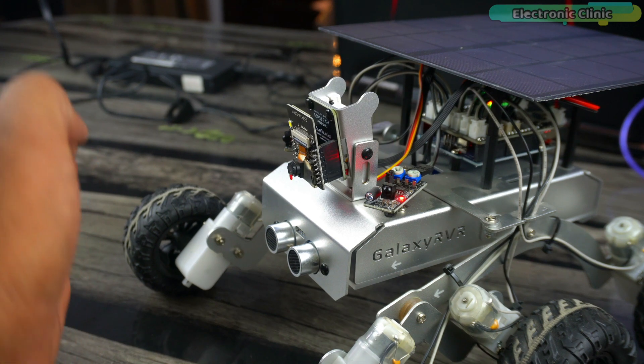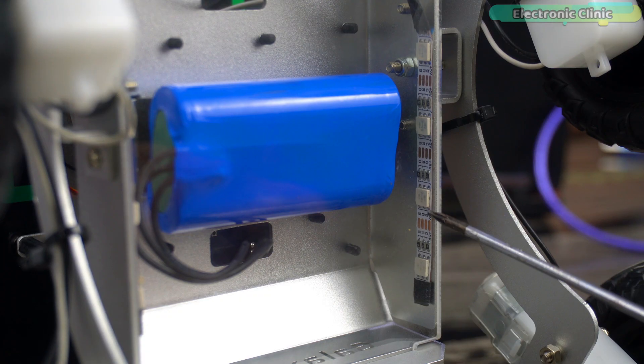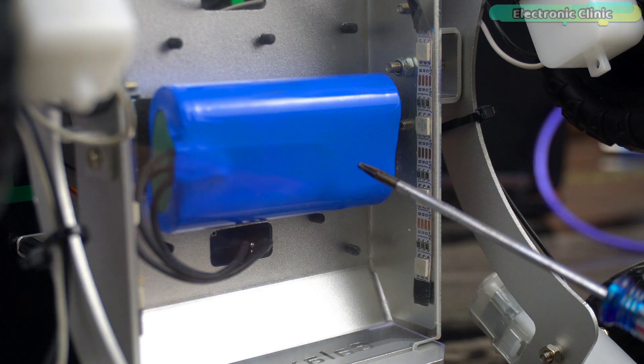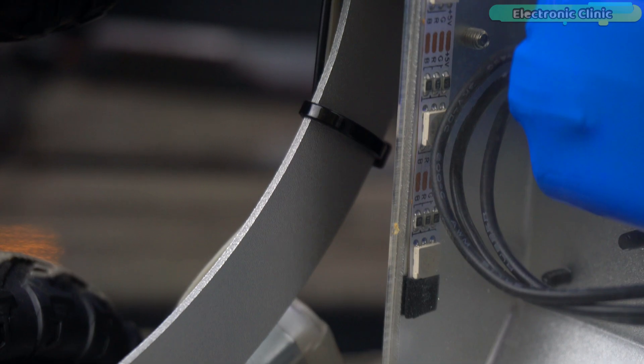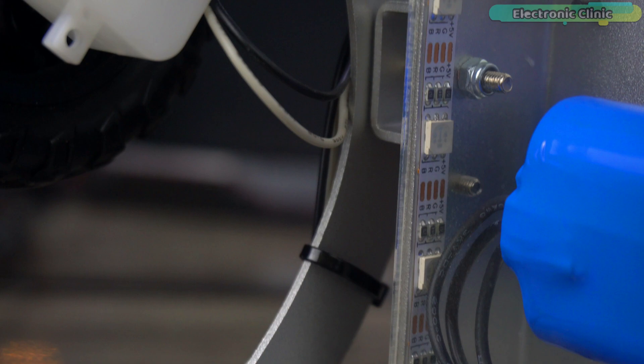After covering the servo motor, next we are going to start with RGB LED strips and battery voltage monitoring. Let's first start with the two RGB LED strips attached underneath the robot body.